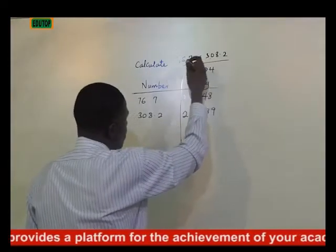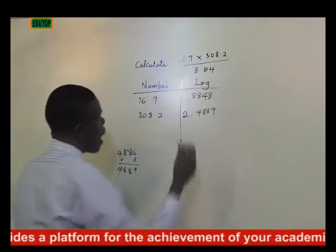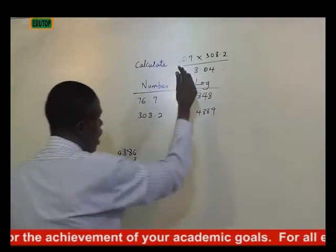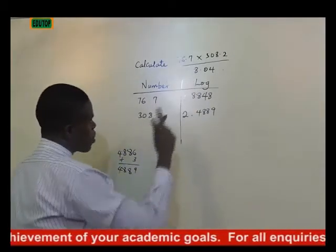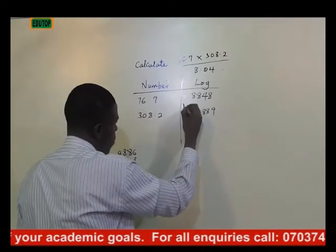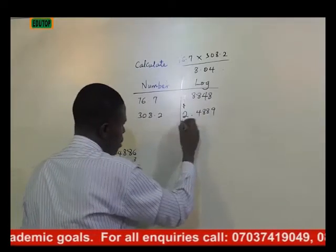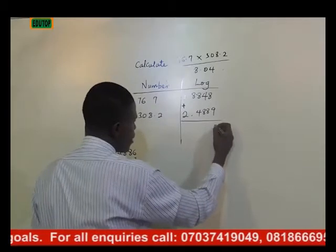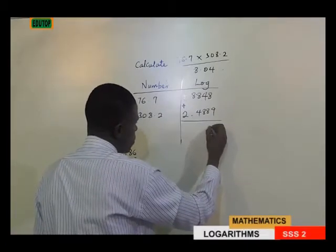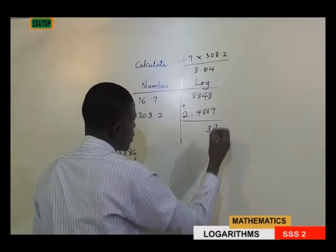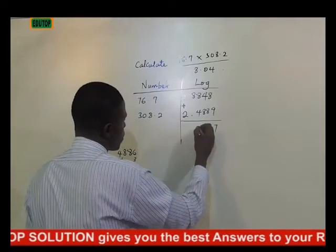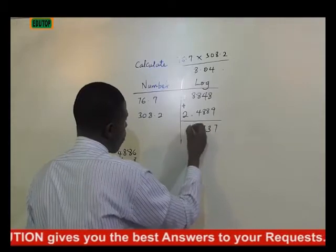It should be noted that in between the values, you have a multiplication sign. In log reading, when you have a multiplication sign, we add, and when we have a division sign, we subtract. So since we have a multiplication sign, that means we add. By adding this, we have 7, 3, 13 — we have 16, 7, then we have 3.4.